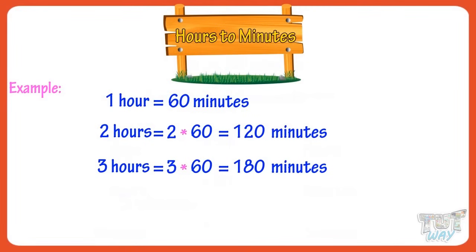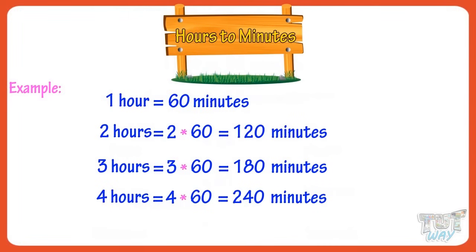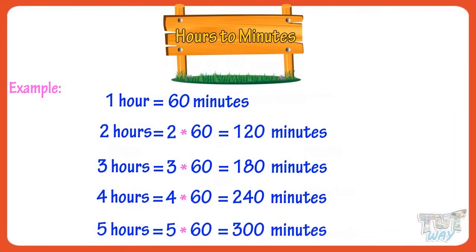So kids, for converting hours to minutes, you multiply the hours with 60. Now let's see more examples. Four hours equals 4 multiplied by 60, equals 240 minutes. Five hours equals 5 multiplied by 60, equals 300 minutes.